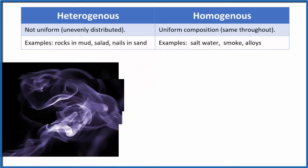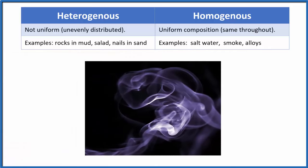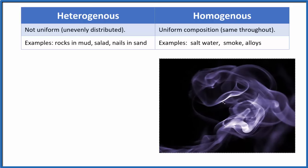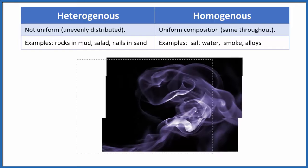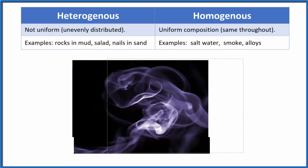How about smoke? In this picture, the smoke is kind of together and the air is by itself, so this would be heterogeneous because it's clumped together. If we waited a while, the smoke would spread out and evenly distribute itself, and would become homogeneous. So you can kind of argue either way for this picture.